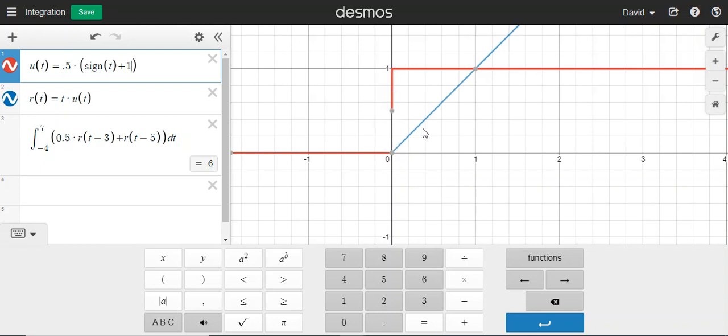But you can see that it is a step function. Then you can rapidly define a ramp function, r of t, t times ut.